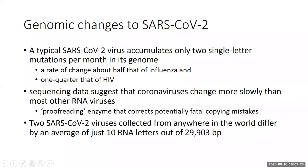The genome does change slowly. We know that SARS-CoV-2 accumulates about two single-letter mutations per month in its genome. To put that in context, it changes about half as much as influenza and about a quarter as much as HIV. It's a slow-changing RNA virus that has proofreading enzymes and other ways of potentially correcting fatal mistakes within its genome. Any two SARS-CoV-2 viruses collected anywhere in the world would differ by about 10 RNA letters out of the 29,000 base pairs in the RNA genome.